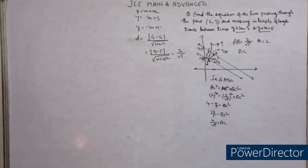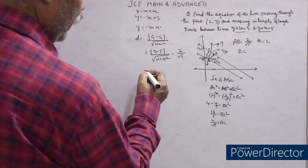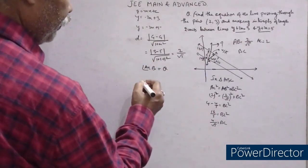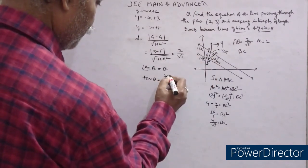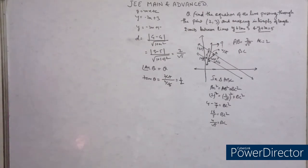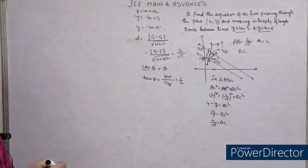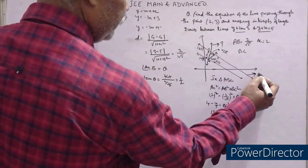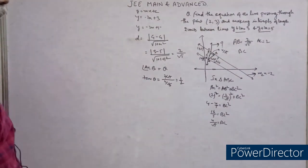The advantage is that I am going to find the angle ACB, let this be theta. tan θ = perpendicular / base = (2/√5) / (4/√5) = 1/2. That is the angle between these two lines.